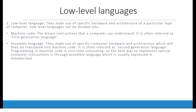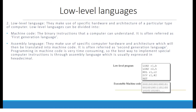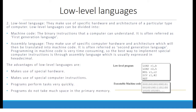Programming in machine code is very time-consuming, so the best way to implement special computer instructions is through assembly language, which is usually expressed in hexadecimal. The advantages of low-level languages are: they make use of special hardware and special computer instructions, programs perform tasks very quickly, and programs do not take much space in primary memory. On the bottom right, we can see a program written in assembly language and the same program in machine code.